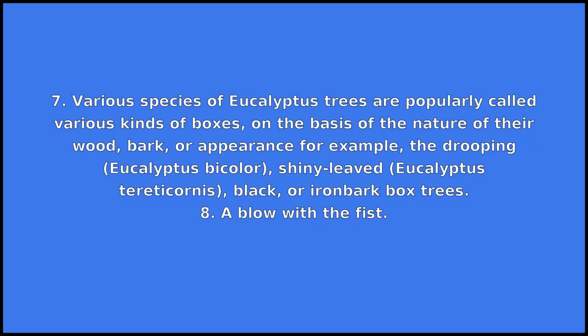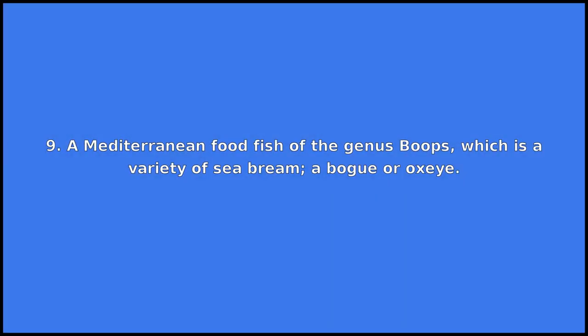7. Various species of eucalyptus trees are popularly called various kinds of boxes on the basis of the nature of their wood, bark, or appearance — for example, the drooping Eucalyptus bicolor, shiny-leaved Eucalyptus tereticornis, black or ironbark box trees. 8. A blow with the fist. 9. A Mediterranean food fish of the genus Boops, which is a variety of sea bream; a bogue or oxi.